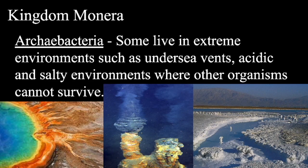The other form of Monera is archaeobacteria. Some live in extreme environments such as underwater sea vents, acidic and salty environments where other organisms cannot survive. These organisms that live in underwater sea vents are known to be chemosynthetic — they use chemicals as their source of energy. That picture on the left is from Yellowstone National Park, the Norris Geyser Basin, where the pH can be anywhere from 2 to 4. To the far right, you have the Bonneville Salt Flats, which host thriving microbial communities adapted to harsh conditions where contact with water would likely kill them.